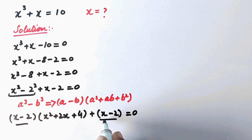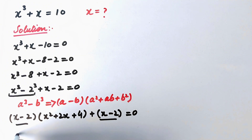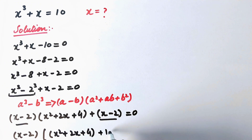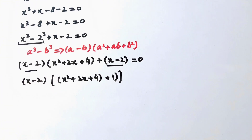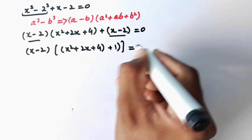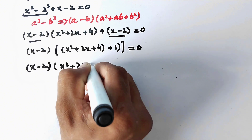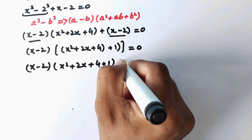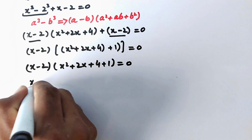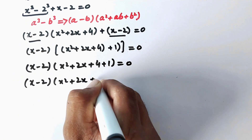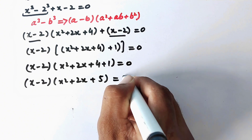We can see that (x minus 2) appears in both terms, so we take it as a common factor: (x minus 2)(x squared plus 2x plus 4 plus 1) equal to 0, which simplifies to (x minus 2)(x squared plus 2x plus 5) equal to 0.